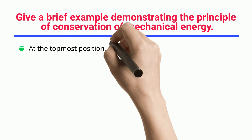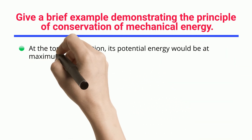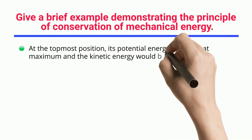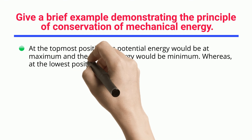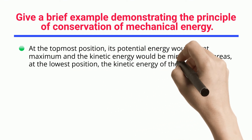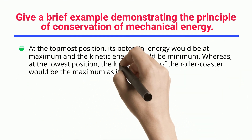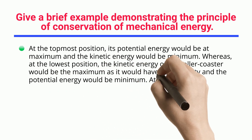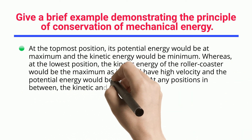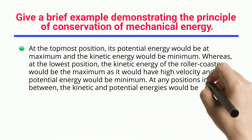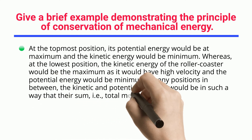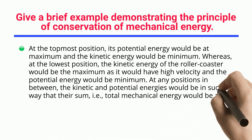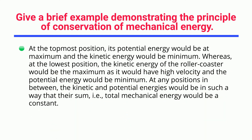At the topmost position, the roller coaster's potential energy would be at maximum and its kinetic energy would be minimum. Whereas at the lowest position, the kinetic energy would be maximum as it would have high velocity, and the potential energy would be minimum. At any position in between, the kinetic and potential energies would be such that their sum — i.e., total mechanical energy — remains constant.